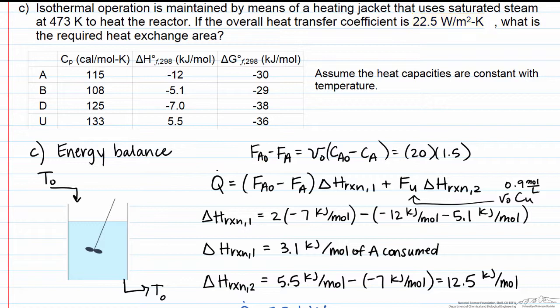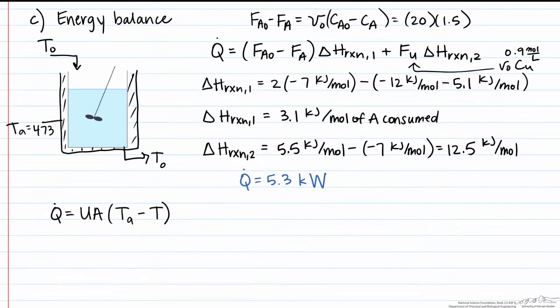We're given that the temperature in the reactor is 298 kelvin, and the temperature of the steam that's in the cooling jacket is 473 kelvin. Now we have everything we need in order to solve for our unknown, which is the required heat exchange area.